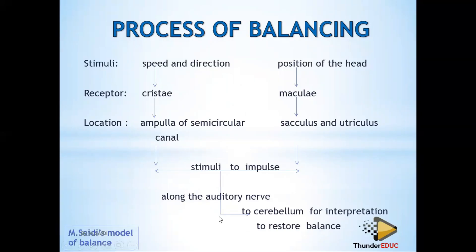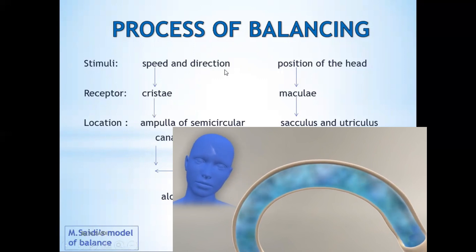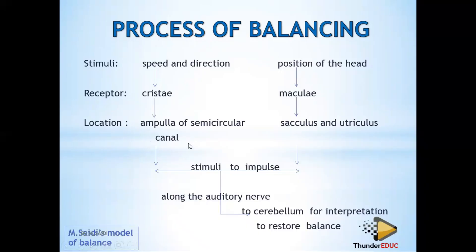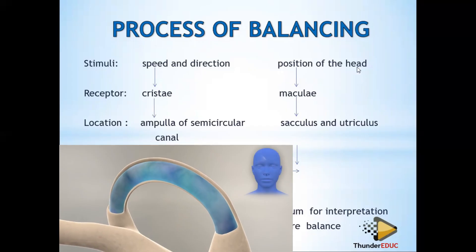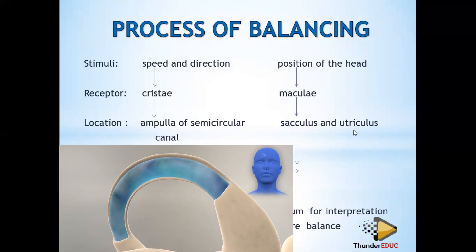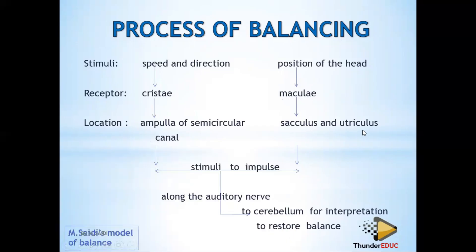To restore balance: the stimulus is sent to the cerebrum for interpretation along the auditory nerves. Change in the speed and direction of the head stimulates the cristae found in the ampulla of the semicircular canal. Change in the position of the head stimulates the maculae found in the saccular and utriculars. The stimuli are converted into an impulse, which is sent along the auditory nerve to the cerebrum for interpretation to restore balance.